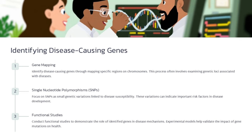Monogenic disorders are caused by mutations in a single gene, while polygenic disorders involve multiple genes interacting with environmental factors. Monogenic disorders often follow clear Mendelian inheritance patterns, making them more predictable, while polygenic disorders exhibit complex inheritance and are harder to predict. Examples of monogenic disorders include cystic fibrosis and sickle cell anemia, while examples of polygenic disorders include heart disease and diabetes. Understanding these differences is crucial for accurate diagnosis and effective treatment approaches.